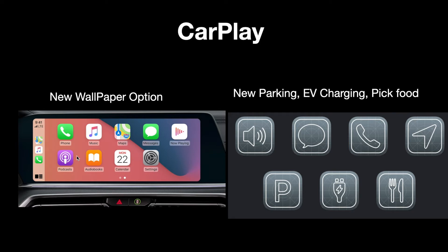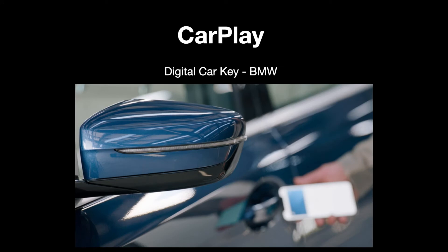With CarPlay, there are new wallpaper options. They've also added three new quick-access options: parking, EV charging, and food or restaurant ordering. Additionally, for BMW — as of now only for specific BMW models — there is a digital car key, so you can unlock your car using your phone and share car access with others. They plan to roll it out to other car brands as well.